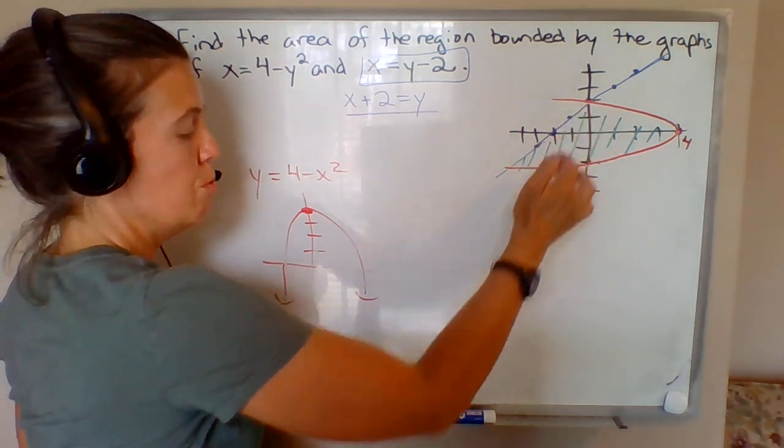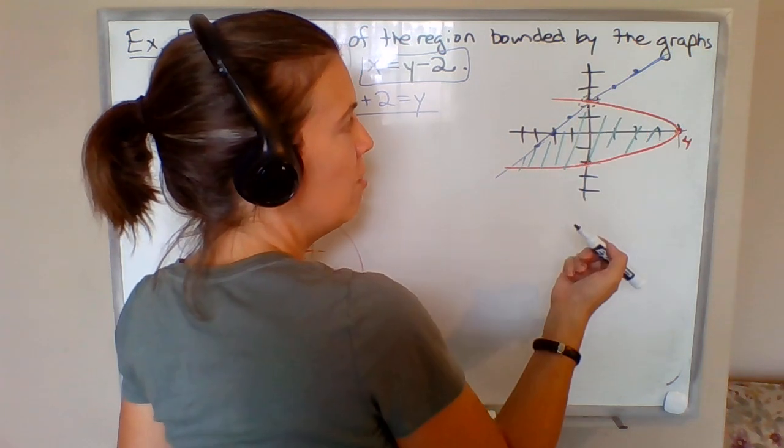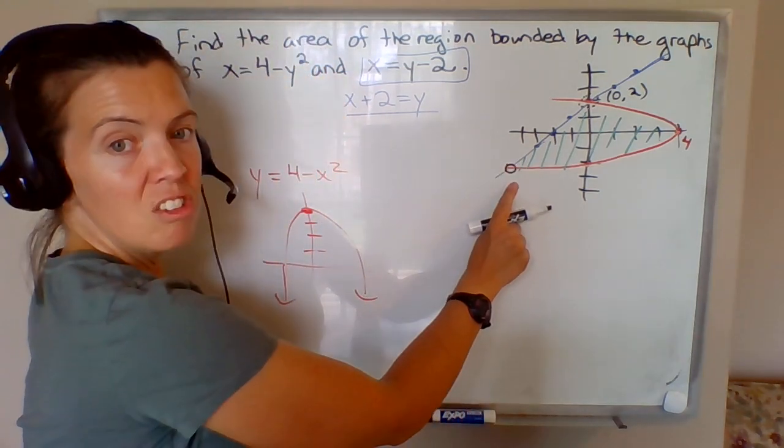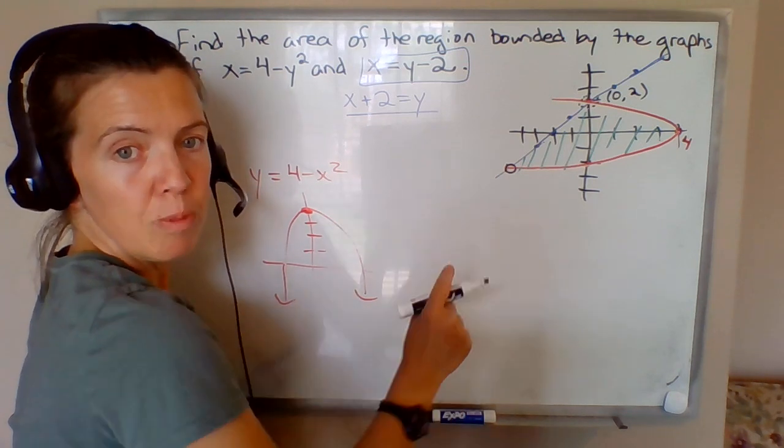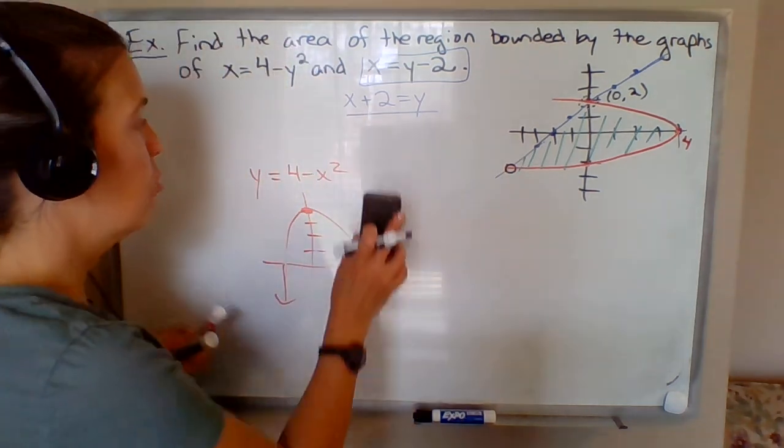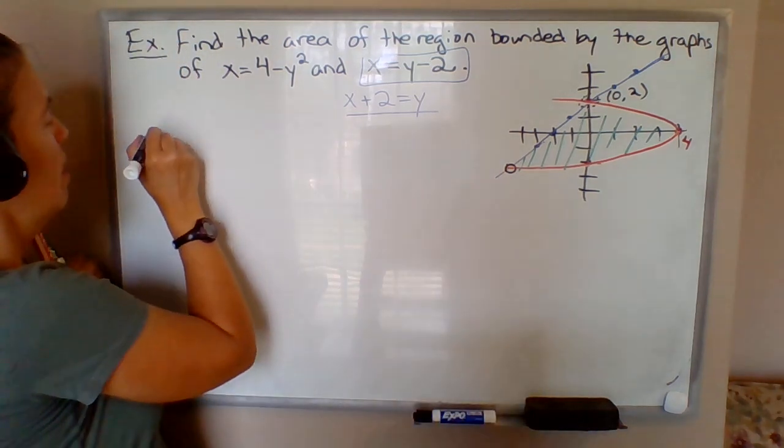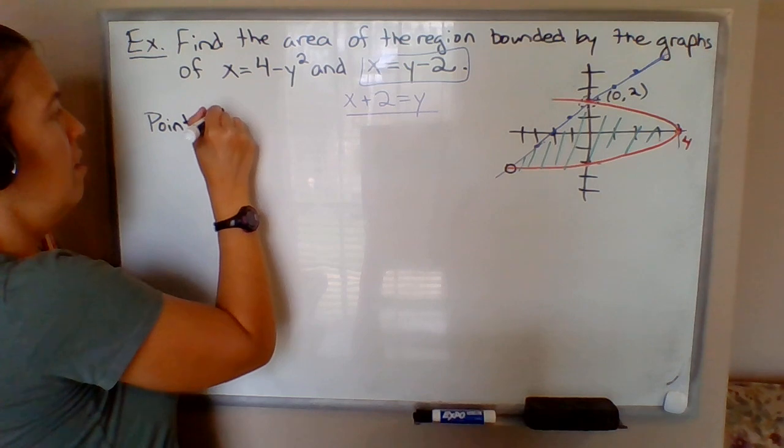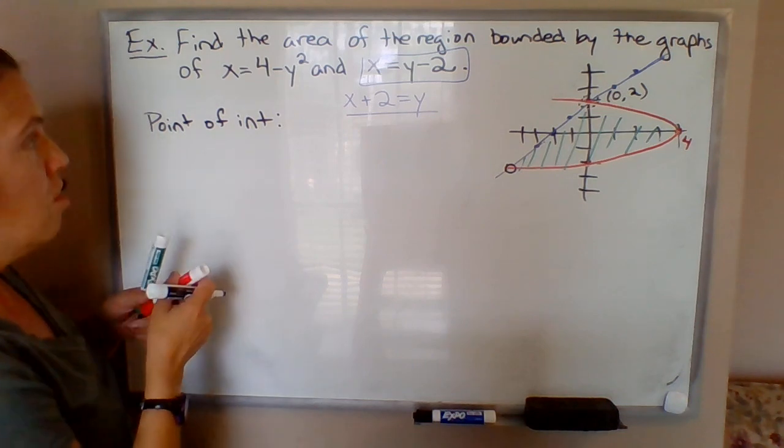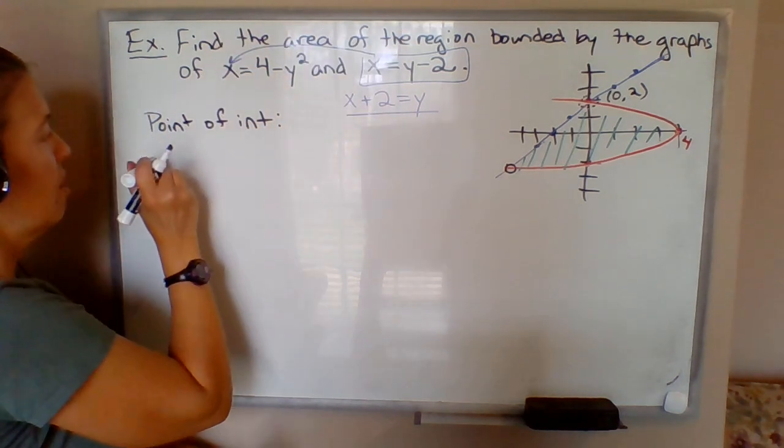So we're finding area of this region here. Already, just by happenstance, we know that this point of intersection occurs at (0, 2). We don't know where this point of intersection occurs, and we need to know what the coordinates are here so that we can set up the correct limits of integration when we set up the definite integral that gives the area. So we're in this position where we want to find a point of intersection.